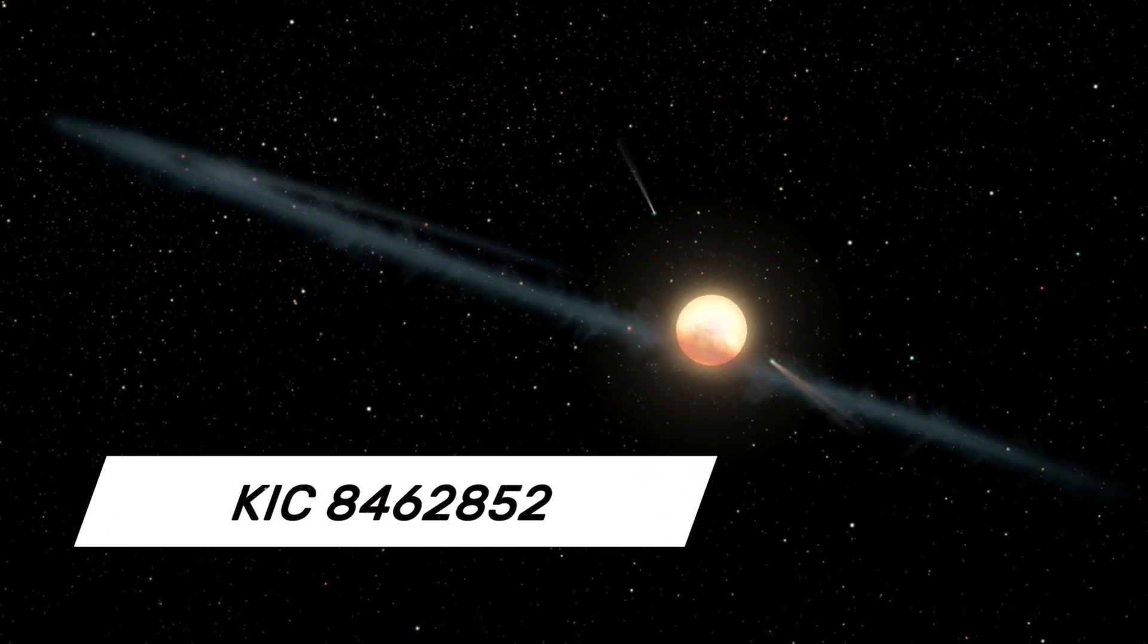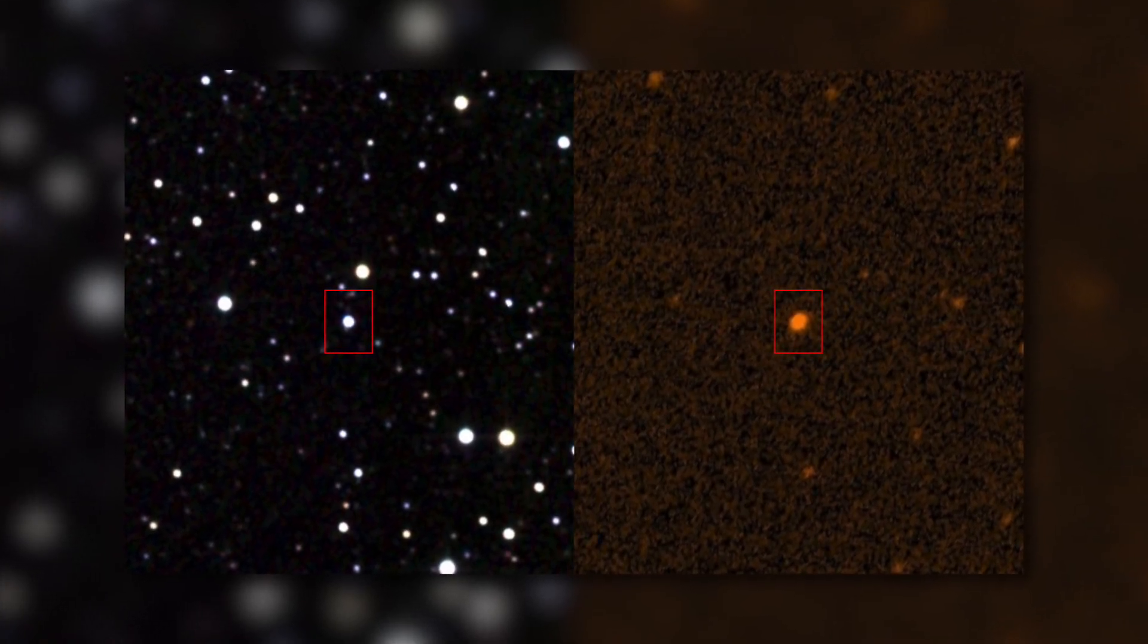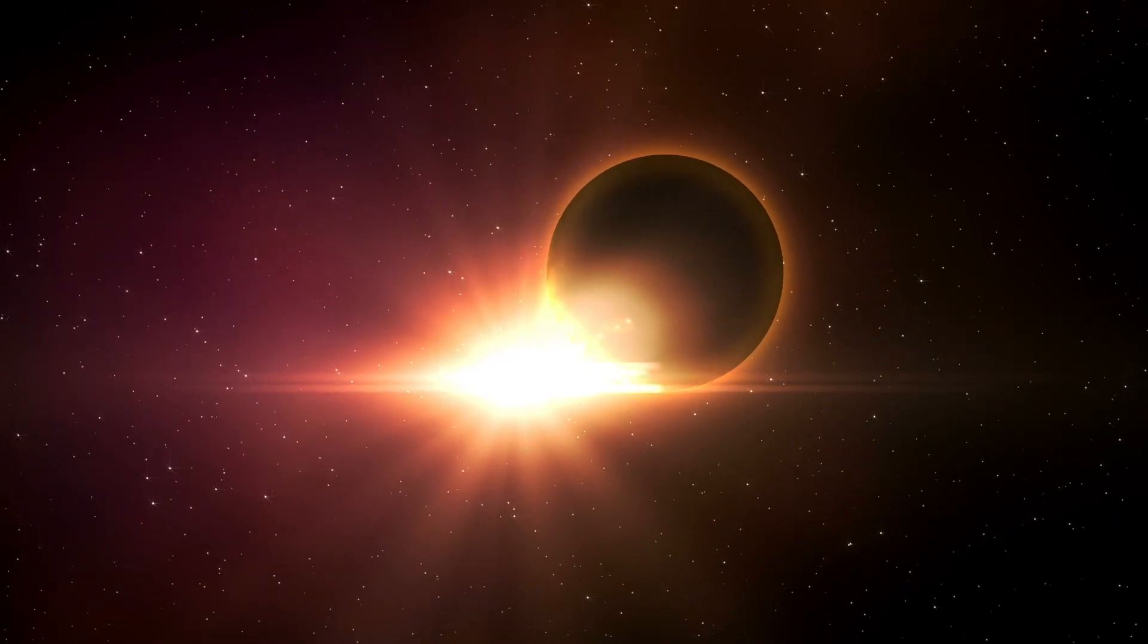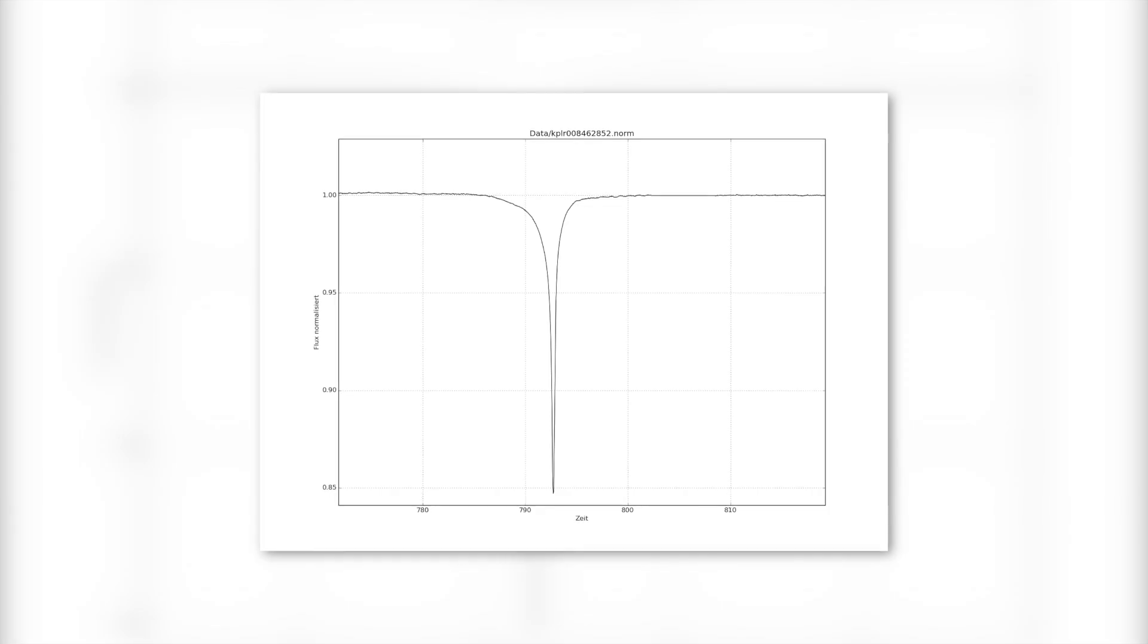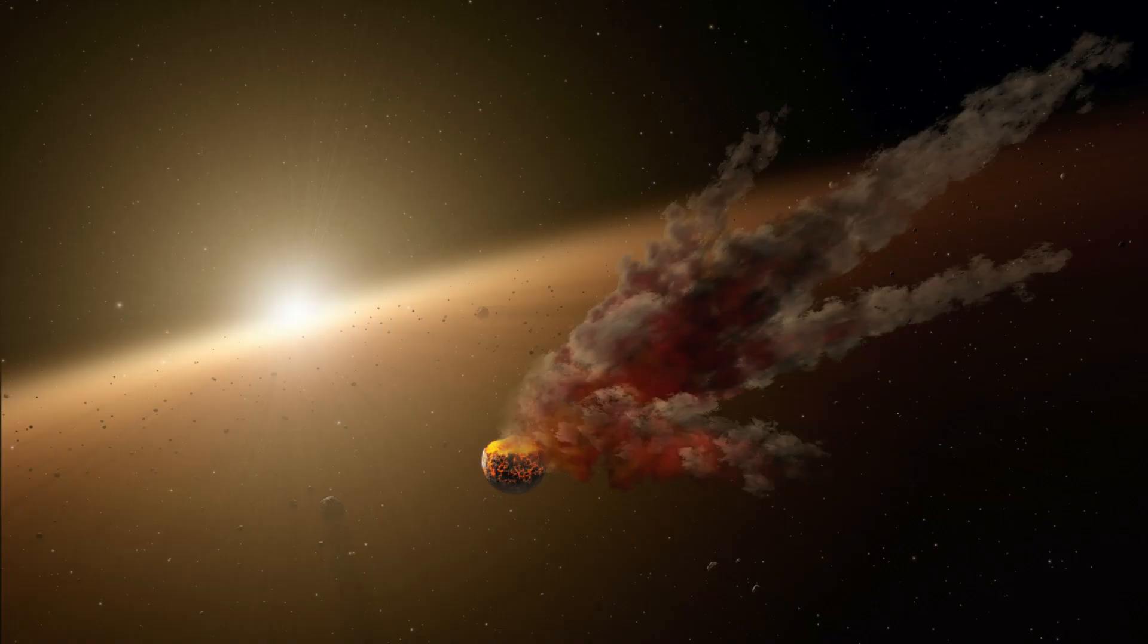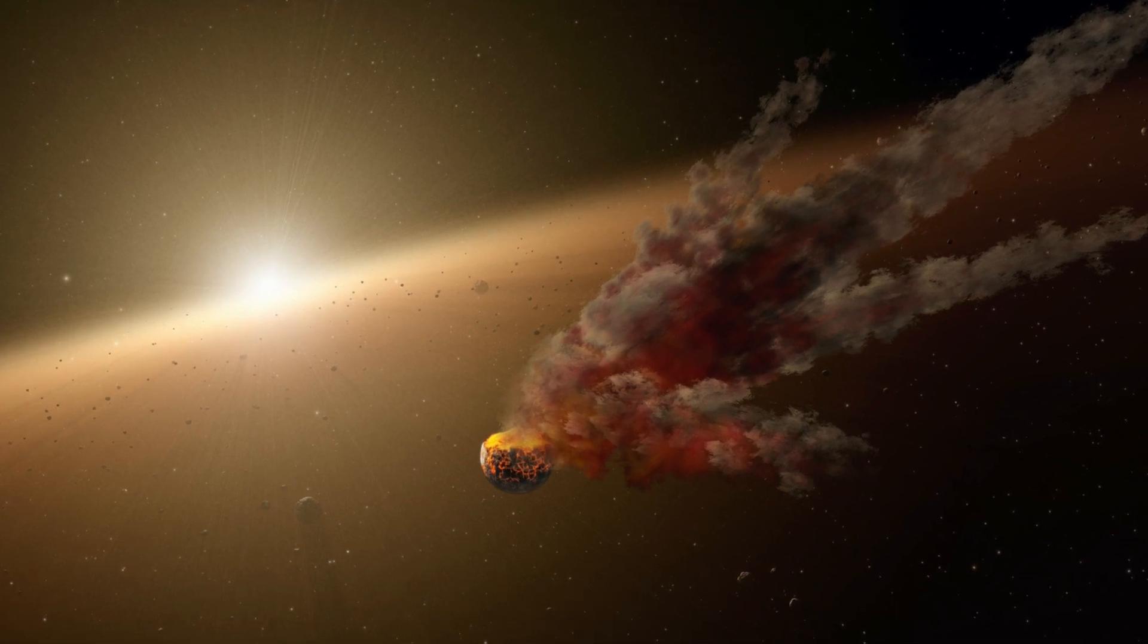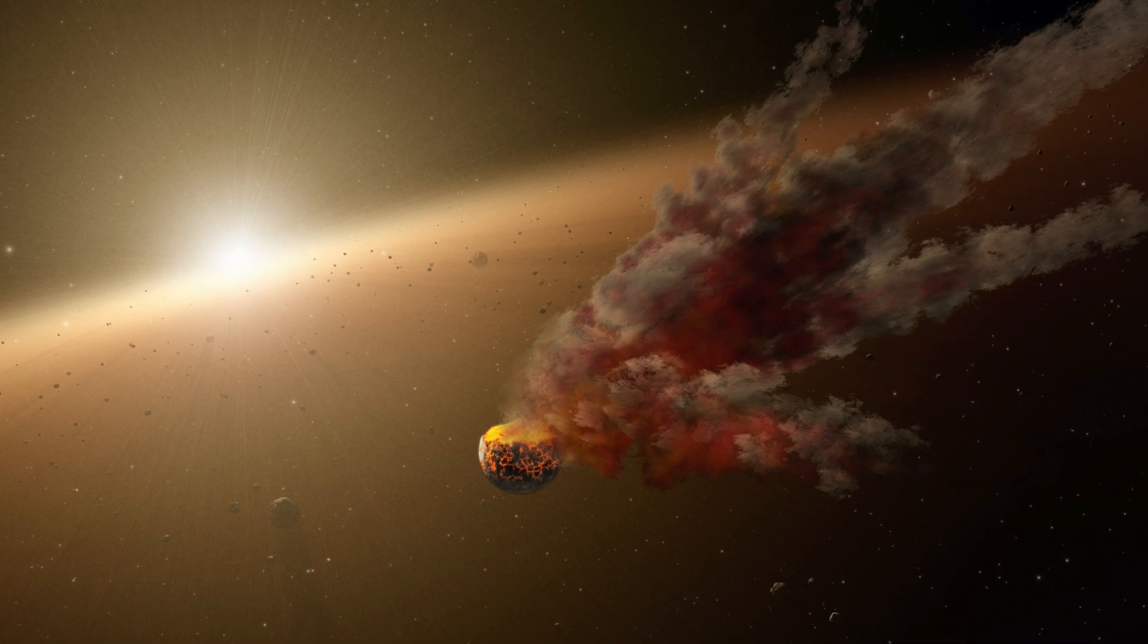KIC 8462852, Tabby's star. Tabby's star shines brightly in the sky, and that is exactly what attracted the attention of researchers. While most stars and planets show only slight variations in brightness, for example when a moon passes by, Tabby's star shows dips of up to 16% in brightness. The results were quickly interpreted in many different ways, from fragments of a planetary explosion in the distance, to structures or buildings built by aliens, everything was represented in the debate.